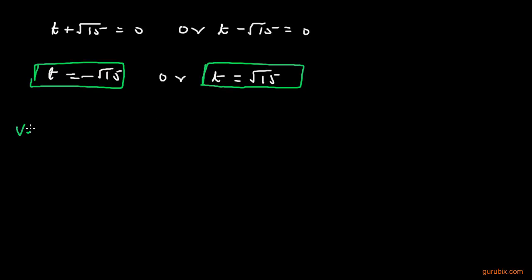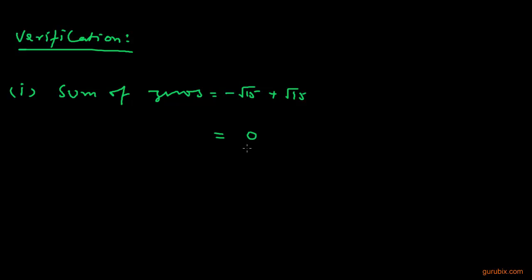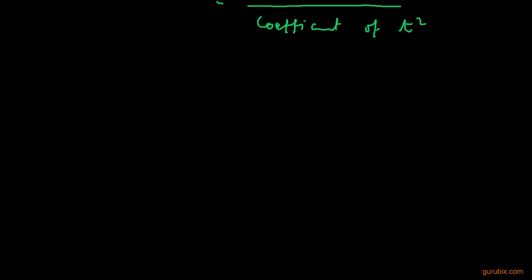Now we shall verify the relationship between the zeros and the coefficients. First, we find the sum of zeros: minus square root of 15 plus positive square root of 15 equals zero, which we write as zero over one. This ratio equals the coefficient of T over the coefficient of T squared.